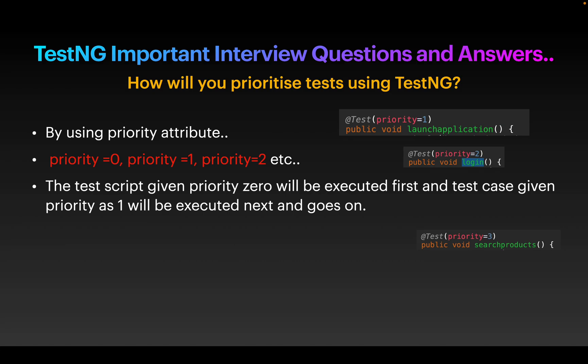Next question: how will you prioritize tests using TestNG? We can use the priority attribute. Priority equal to 0 means that test case will execute first; priority equal to 1 means that test case executes after priority 0 is completed. That is how priorities work in TestNG.